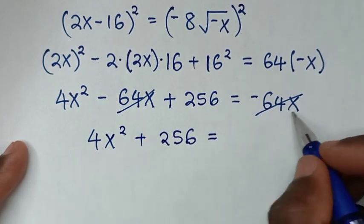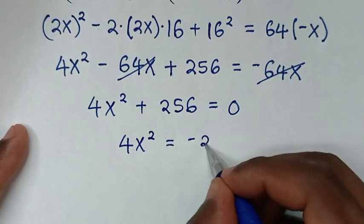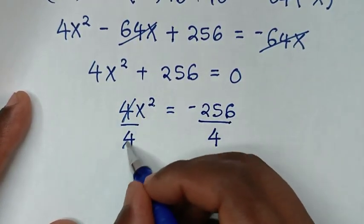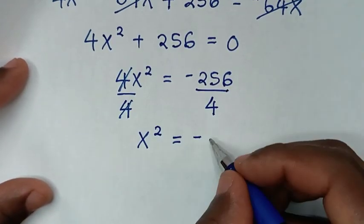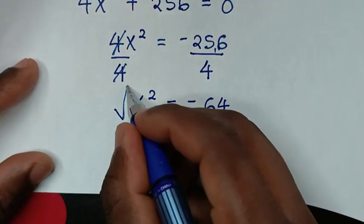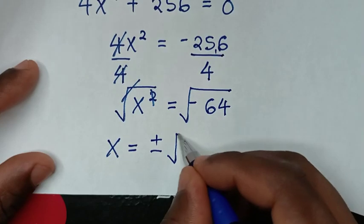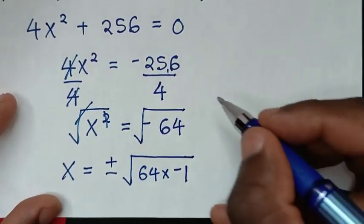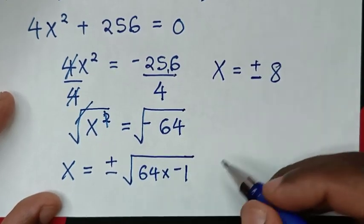So we have 4x squared minus 64x plus 256 equals negative 64x. The negative 64x terms cancel from both sides, leaving 4x squared plus 256 equals 0. Taking 256 to the other side: 4x squared equals negative 256. Dividing both sides by 4: x squared equals negative 64. Applying square root to both sides: x equals plus or minus square root of negative 64, which is 8 times the square root of negative 1, which is i.